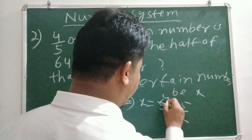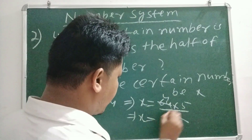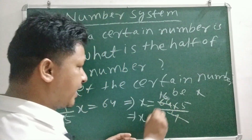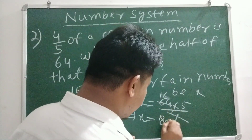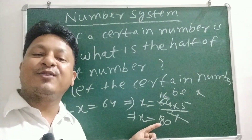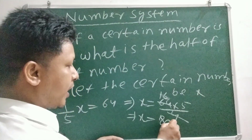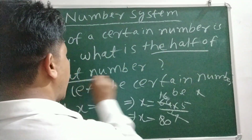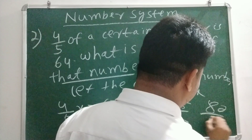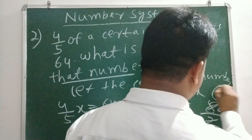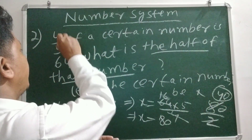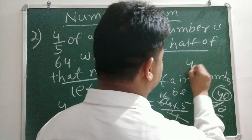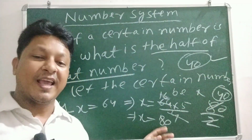x is equal to 80. Half of that number is 80 by 2, which is equal to 40. So the answer is 40.